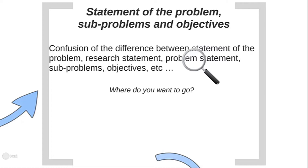The problem statement is the bigger picture of what you want to do in your research — what problem you intend your research to answer. Your sub-problems, as the name suggests, tell your reader how you intend to answer the main research problem — what the smallest steps are in solving it. Lastly, your objectives point to what your intentions are in terms of the problem you want to address. Let's look at each of these with a nice, easy example.